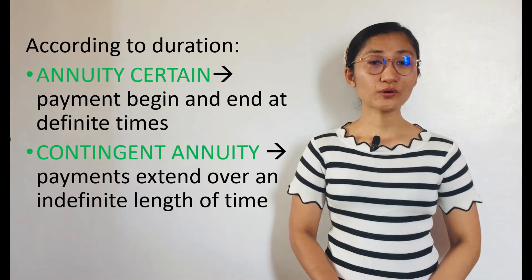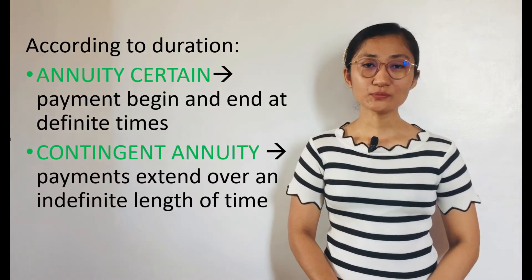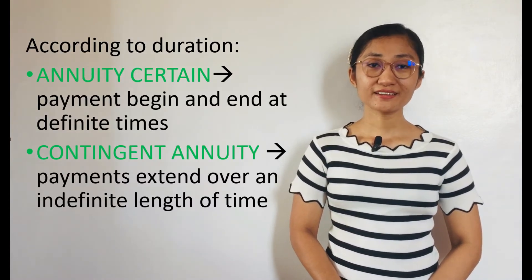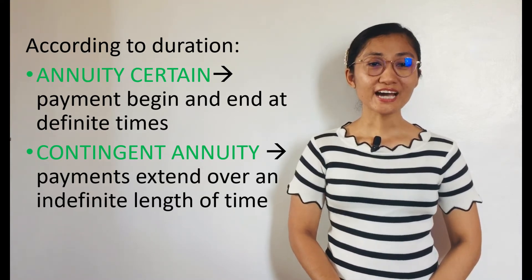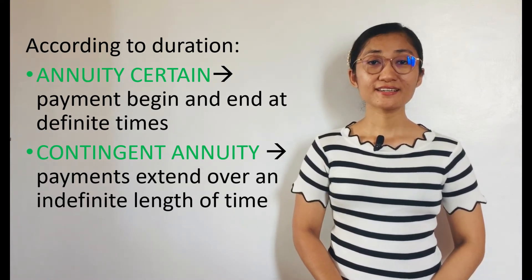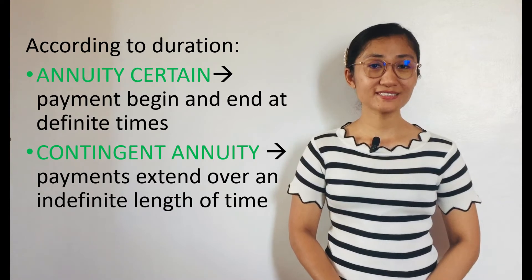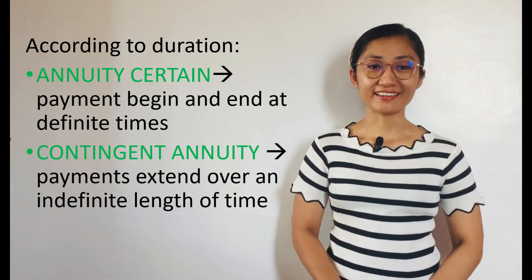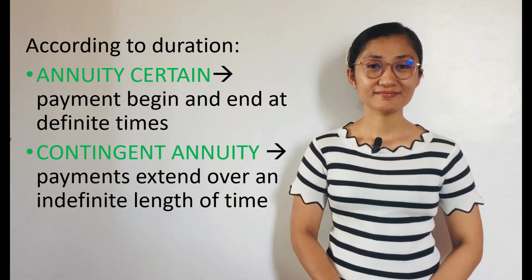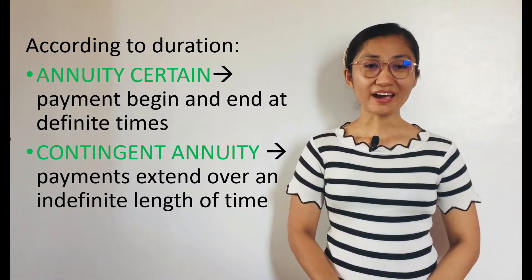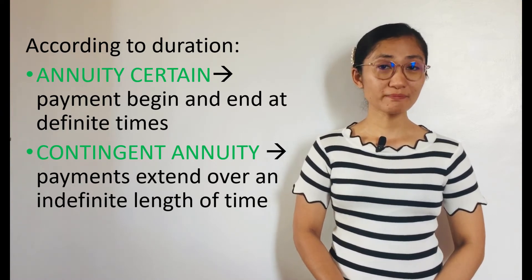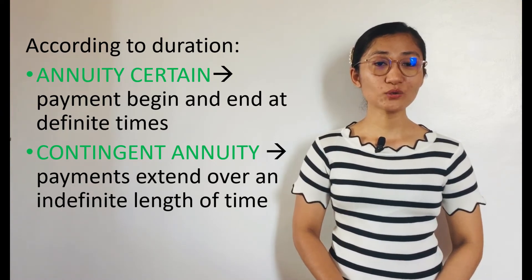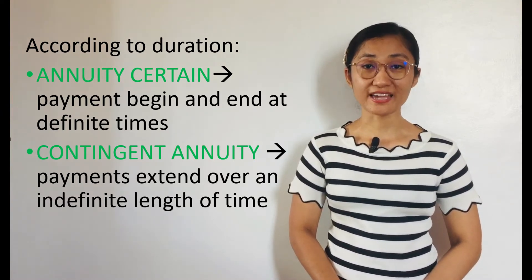Annuities may also be classified according to duration as Annuity Certain and Contingent Annuity. Annuity Certain is an Annuity in which payments begin and end at definite times, while Contingent Annuity is an Annuity in which payments extend over an indefinite period of time.